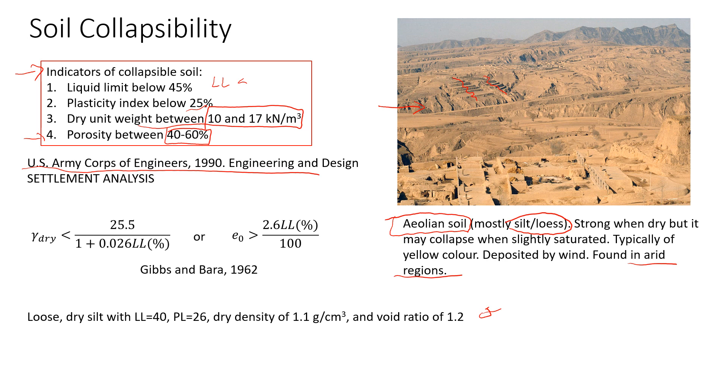Another thing that we can use for our estimations is these two formulas. They came from this study by Gibbs and Barra. It's a relatively old study, 1962. But we can still use these correlations, either one for dry unit weight or for void ratio to estimate the collapsibility of soil. And this is what we're going to do. We're going to practice a little bit. We're going to use all of these three criteria. And let's look at the example when we have loose dry silt and has liquid limit and plastic limits of these values. Dry density is not very high, 1.1 grams per cubic centimeters. And we are given void ratio of 1.2.